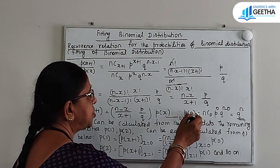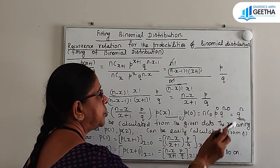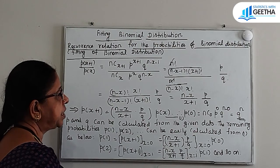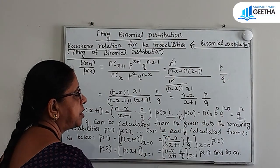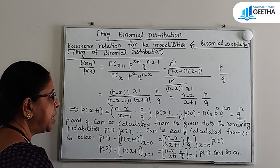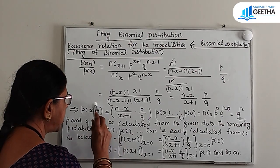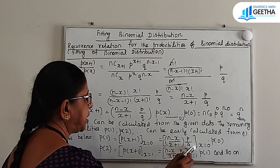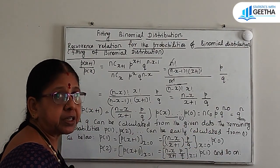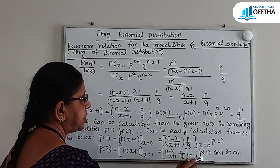To use this recurrence relation, P(0) = q^n. So P(0) is always q^n. P and q can be calculated from the given data. With P(0) = q^n, the remaining probabilities P(1), P(2), etc. can be easily calculated from equation 1. For example, P(1) = P(x+1) at x=0, which is n × (p/q) × P(0). Similarly, P(2) is obtained by substituting x=1 into equation 1, and so on.